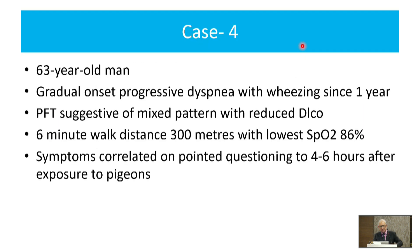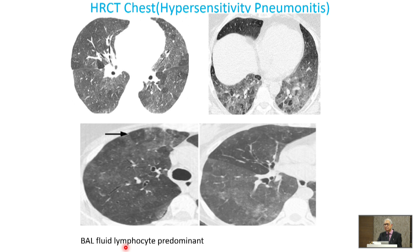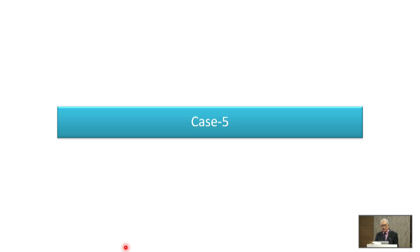Case 4 was a 63-year-old male with gradual progressive dyspnea — a classical case of hypersensitivity pneumonitis. The CT scan shows lots of nodules, mosaic attenuation, and a head-cheese appearance. As per Indian data, 47% of ILDs are actually hypersensitivity pneumonitis, and in practice we are seeing a lot of it.